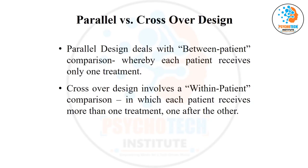The second important thing in a randomized control trial is the design — how you are going to give the intervention. There are two possibilities: a group of people will receive only one treatment, or both treatments are received by both groups. The purpose of randomization is to balance both groups so that whatever the age, gender, or comorbidities, both groups are balanced, ensuring that the effect observed is the effect of the intervention and not a confounding factor.